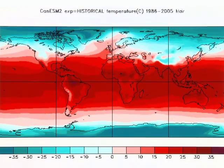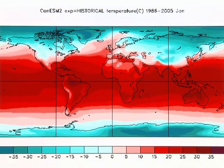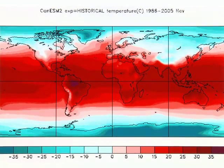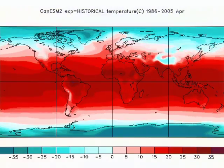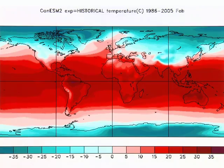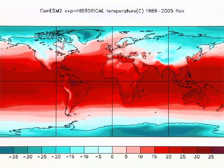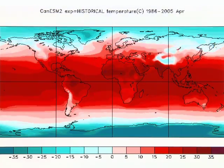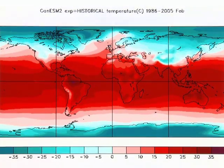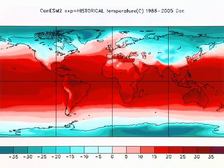Let's step inside a climate model to experience a simulation of the seasonal evolution of surface temperature. We are looking at the average temperature for each month as simulated for a recent 20-year period. At high latitudes, cool temperatures indicated by shades of blue occur in wintertime, and warm temperatures indicated by shades of red occur in summertime. You have to remember that what the climate model is showing are average temperatures, day and night, for a given month.